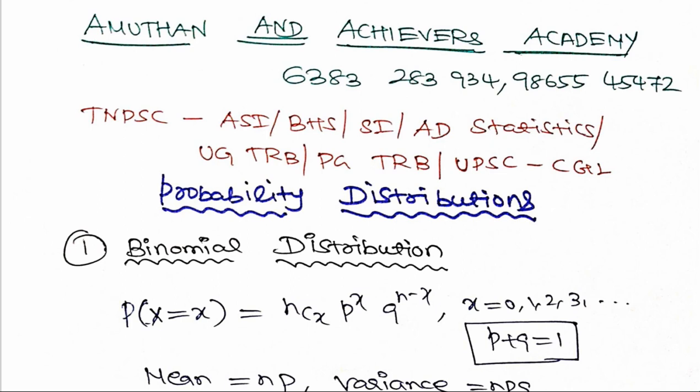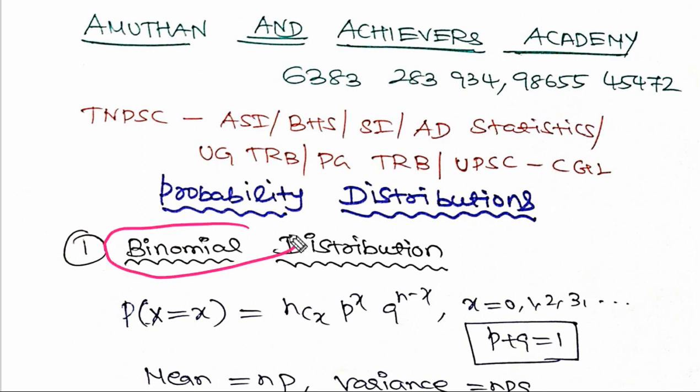Two important distributions in the discrete category. One is the Binomial Distribution, and the other is the Poisson Distribution. We will cover the basics and mode of the Binomial and Poisson Distributions.